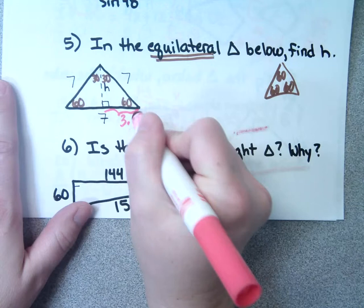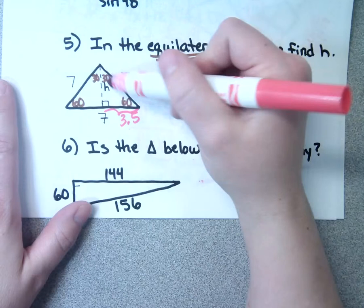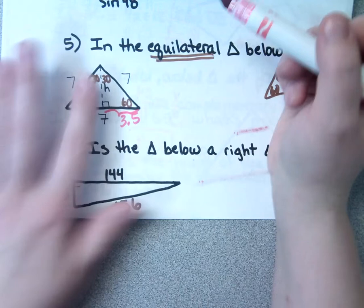Because I see it's a 30-60-90, that's how I'll work it. I could do Pythagorean theorem too, but I think the 30-60-90 is easier. Do you remember what you label across from the 30?